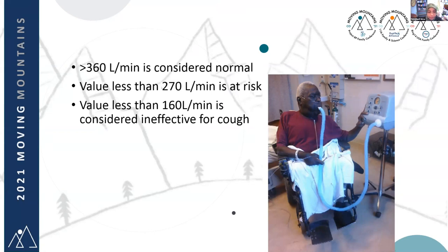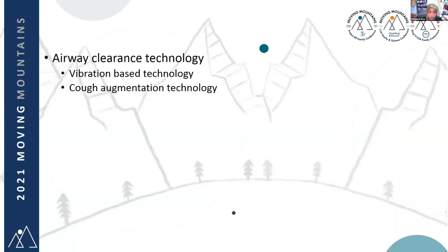The purpose of starting intervention at a higher level than what counts as ineffective is to provide a buffer. From the point I see patients in clinic to when they return and get retested, if they decline in the interim I can catch them proactively. If they catch a concomitant respiratory illness, any infection stresses the system and causes a transient decline in muscle strength, which can quickly push them below 270 liters per minute. So once they hit 300-270, I'll jump in and start working on airway clearance.